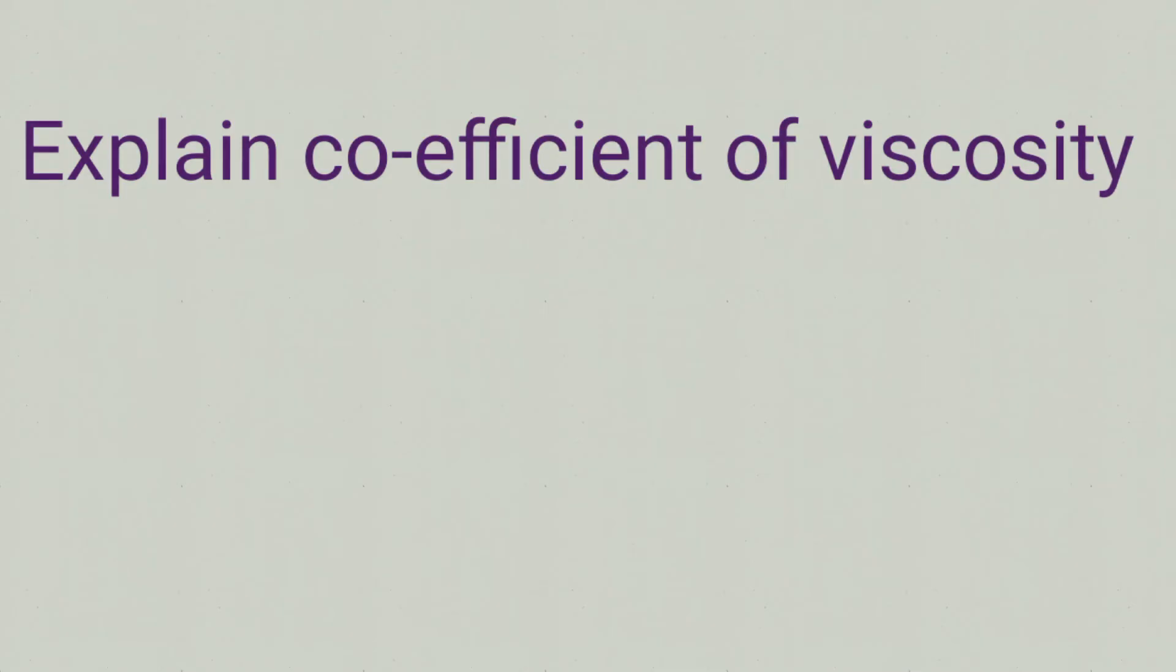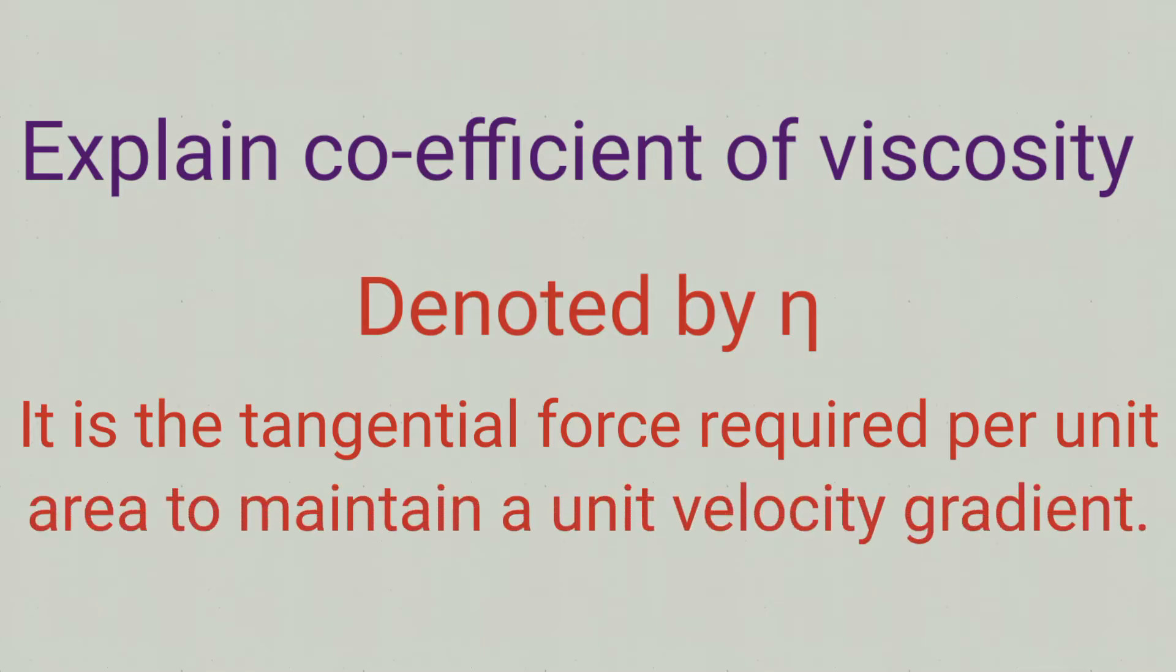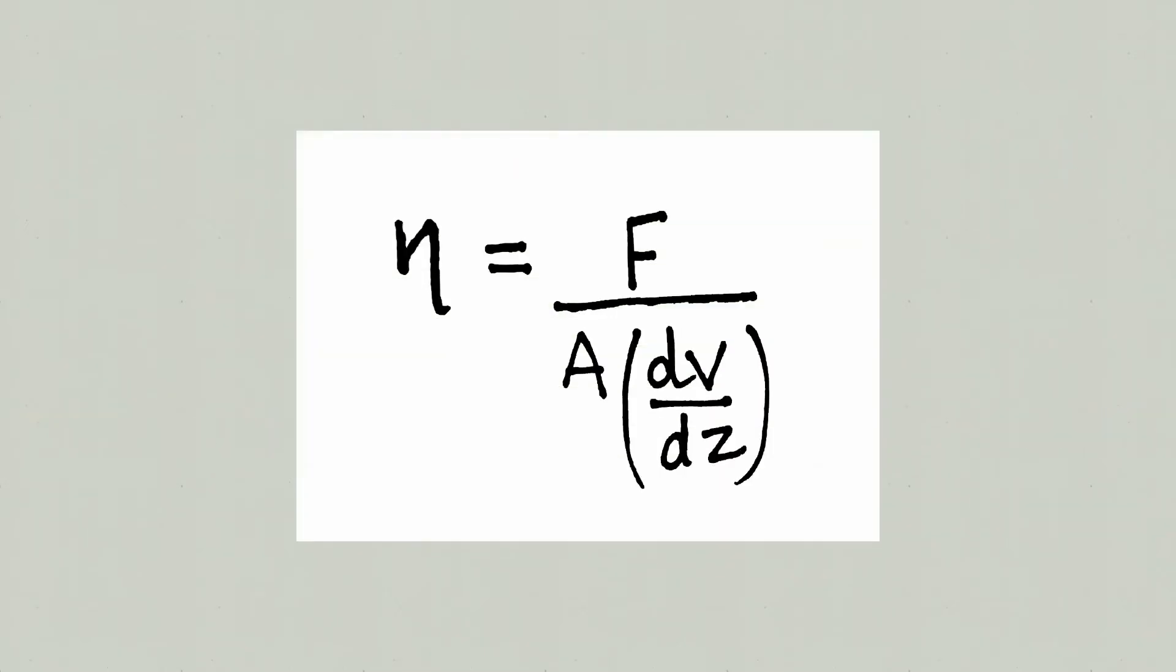Explain coefficient of viscosity. It is denoted by the letter eta (η), and it is the tangential force required per unit area to maintain a unit velocity gradient. The coefficient of viscosity is given as F upon A into dv by dz. The dimensions are M¹L⁻¹T⁻¹.